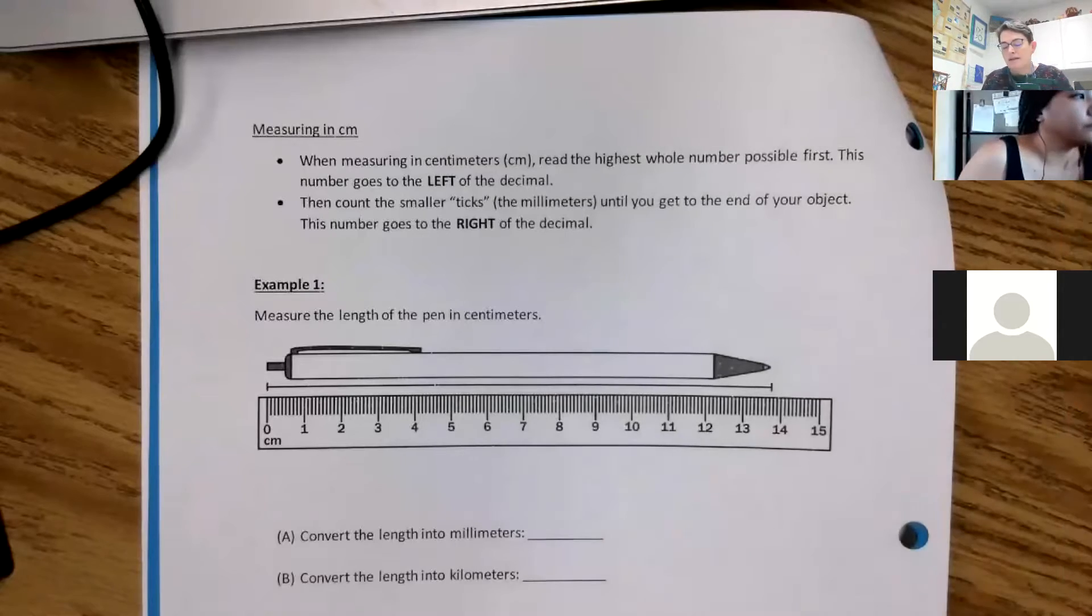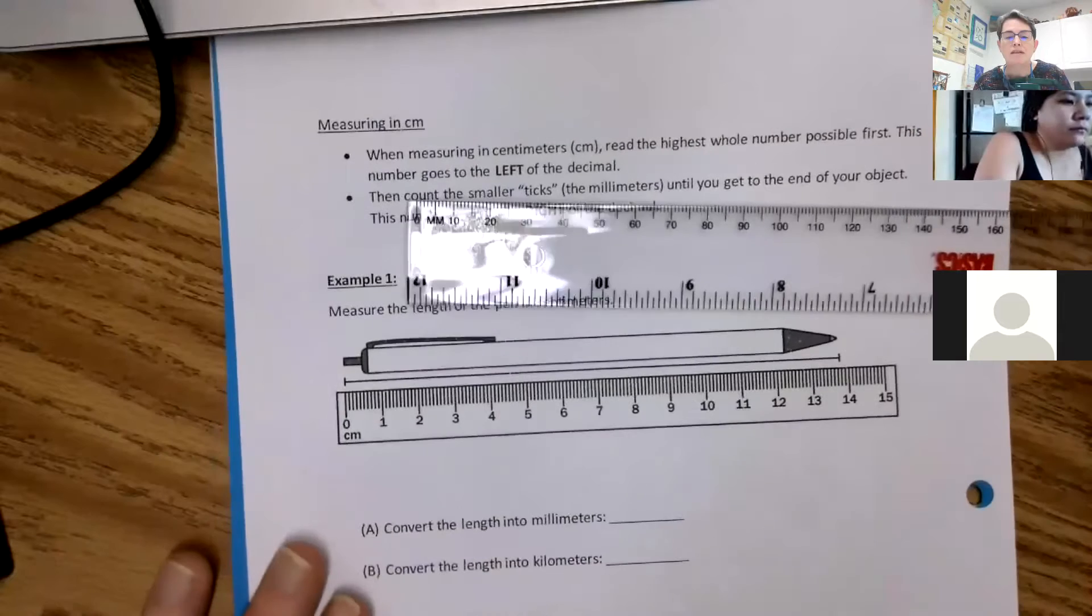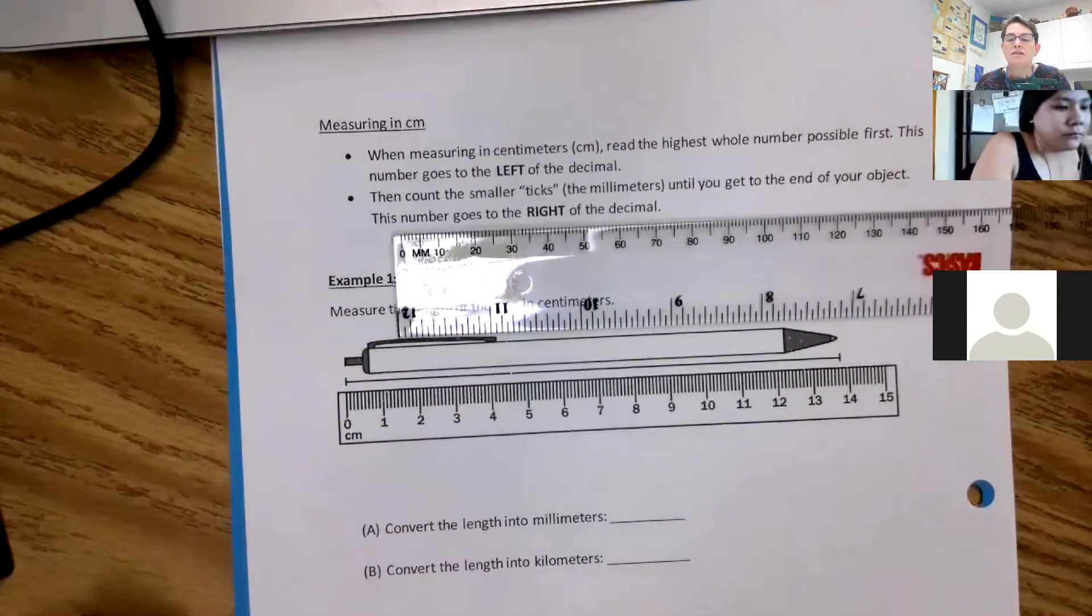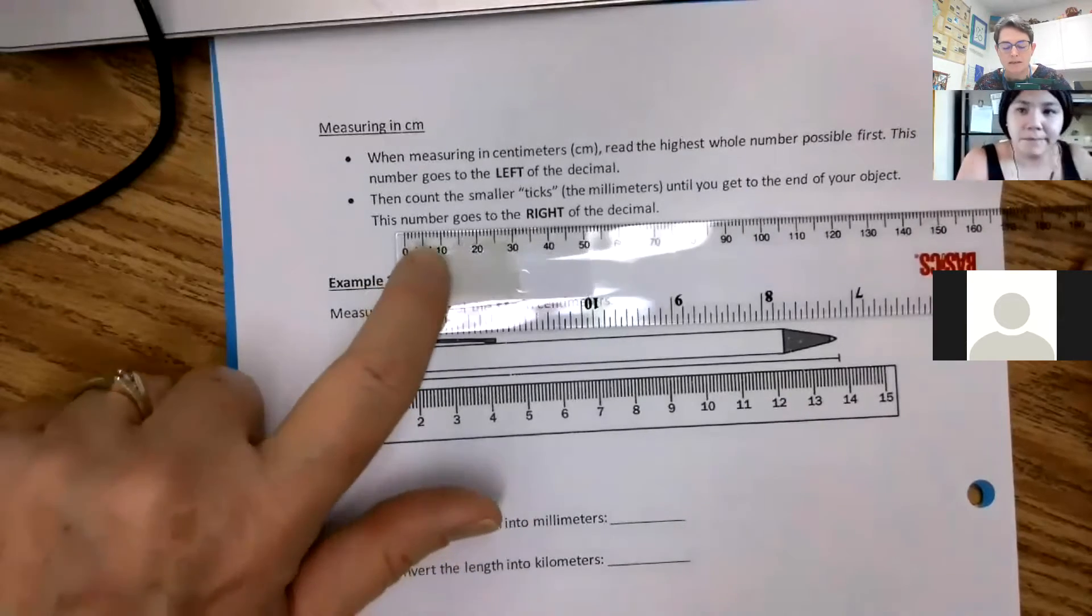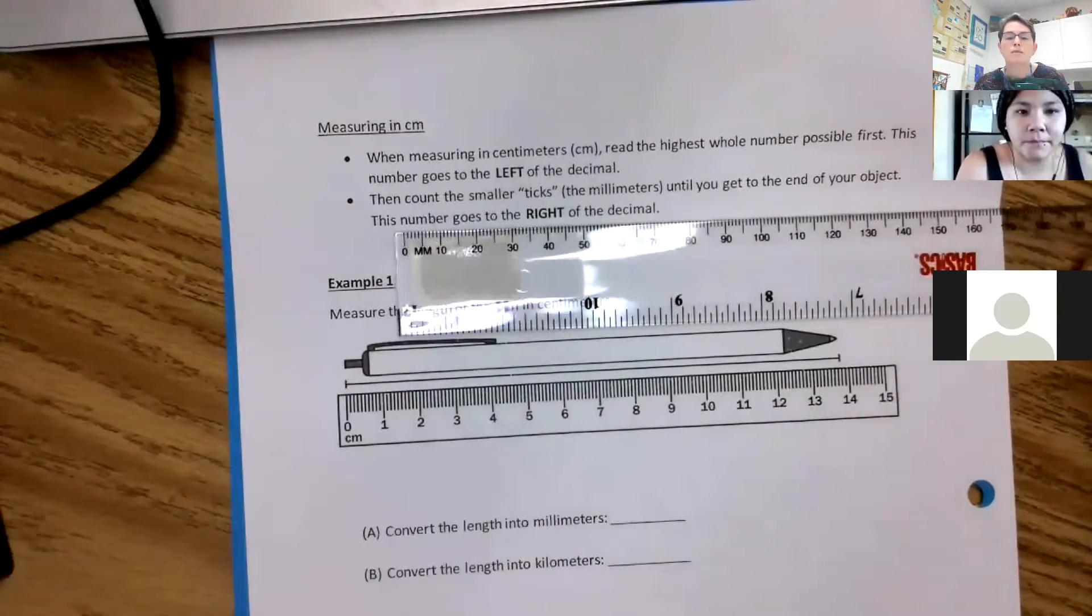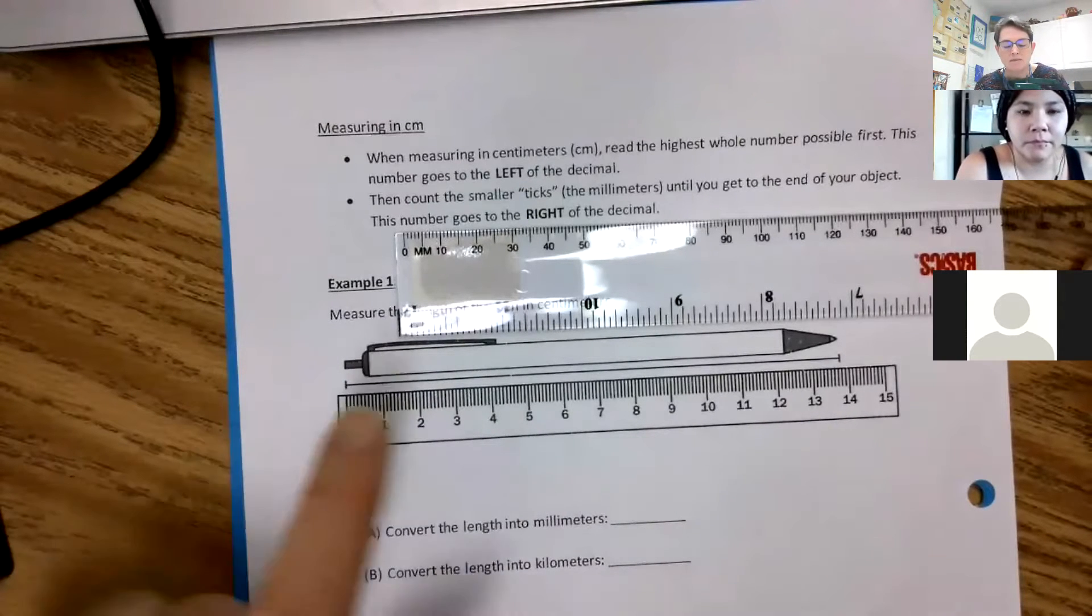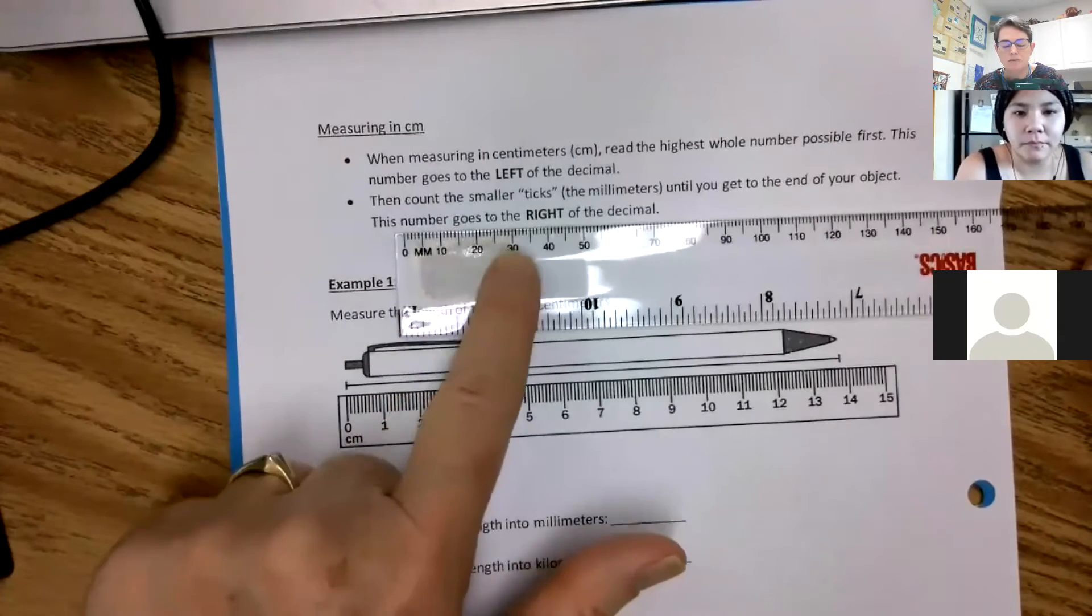The only problem is, realize the rulers that we have at school, at least the plastic ones that I keep giving out, are actually measured in millimeters. So when this goes 10, 20, 30, 40, that's all in millimeters, those little ticky bits. If that was in centimeters, it would be one, two, three.